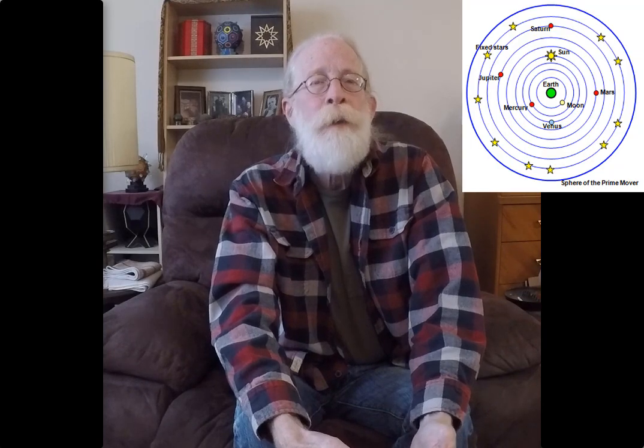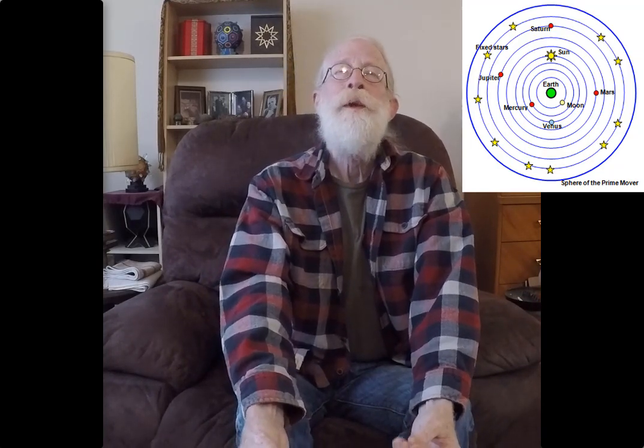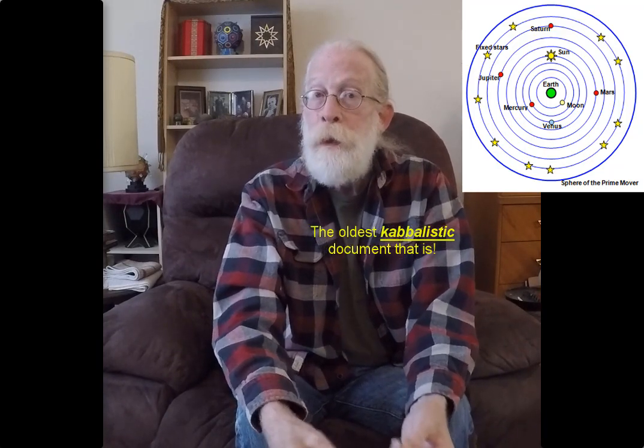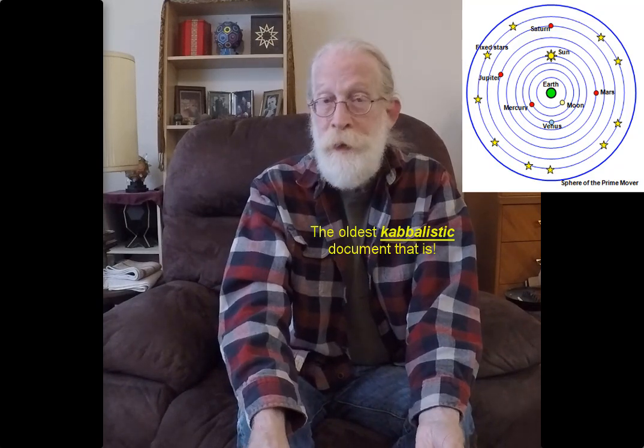Saturn, number three. That's where Saturn gets its number three, not from the Tree of Life. The Tree of Life diagram came probably later than this cosmology. The Sephir Yetzirah, which is the oldest document, manuscript that we have, comes from about 100 BC. The philosophy, the cosmology is obviously older than that, but still it has nothing to do with the Sephiroth and the Sephirotic numbers. That is not where their numbers come from.